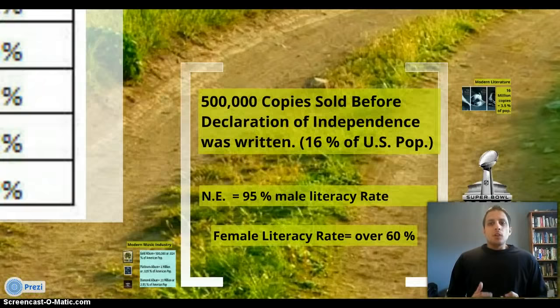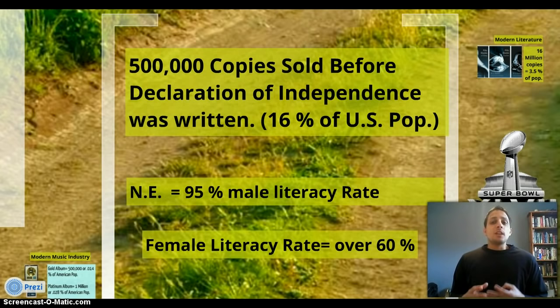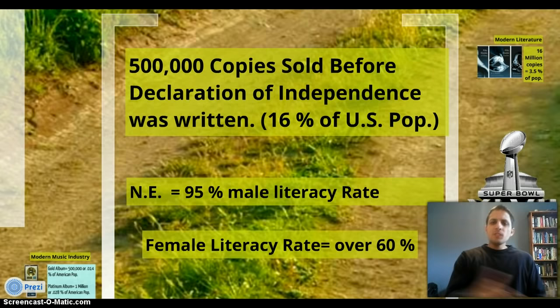About 500,000 copies were sold before they wrote the Declaration of Independence. Your textbook gives the figure of about 300,000, which is true for just the first couple of months. That equates to about 16% of the United States population at the time — an incredible amount.